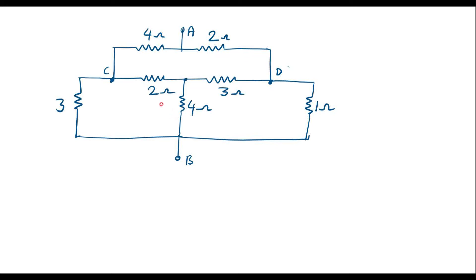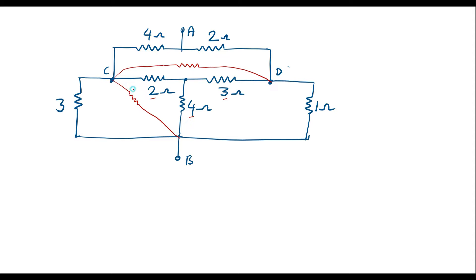From this circuit we can observe that the 2 ohm resistor, 3 ohm resistor, and 4 ohm resistor are connected in star fashion. We will try to convert these star-connected resistors into delta fashion. The equivalent delta circuit will appear with one resistor between nodes, one between node C and B, and one between B and D.